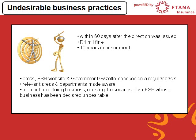4. The FSP who must rectify or reinstate must do so within 60 days after the direction was issued. 5. If the FSP does not adhere to the Registrar's directive, a fine of not more than $1 million or imprisonment of not more than 10 years or both may be imposed in terms of Section 36 of the FAIS Act. 6. It is important that FSPs and key individuals ensure that the press and specifically the FSB website and the Government Gazette are checked on a regular basis for notification of undesirable business practices, because one is not allowed to do business with an FSP whose business has been declared undesirable. The key individual must ensure that the relevant areas and departments of the business are aware of a declared undesirable business practice, and must also be informed not to continue doing business with or using the services of an FSP whose business has been declared undesirable.